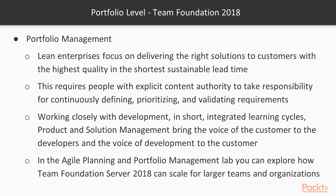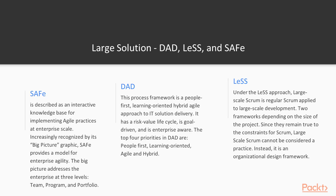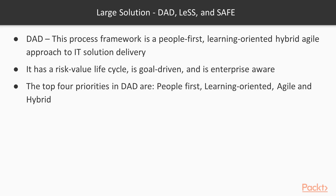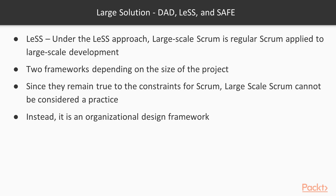This is usually where your PMO — your portfolio management office — would be responsible. I've included a lab which you can spin up and try these different examples of how you manage at the portfolio level, and how TFS 2018 has really helped bring in some new features to enable this. The next level down, previously the value stream component, is now the large solution. I've mentioned three separate types throughout these videos: SAFe, which is the Scaled Agile Framework; DAD, which is Distributed Agile Delivery; and LeSS, which is Scrum of Scrums. They're all very different methodologies, and it depends on what works best for your organization.